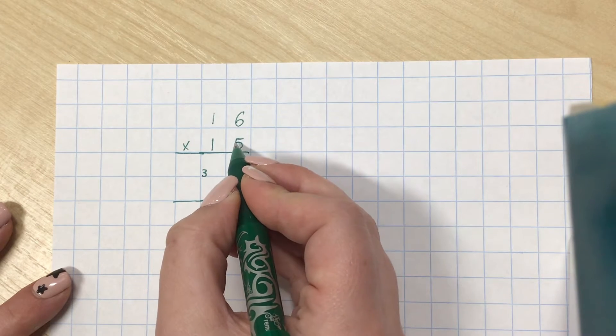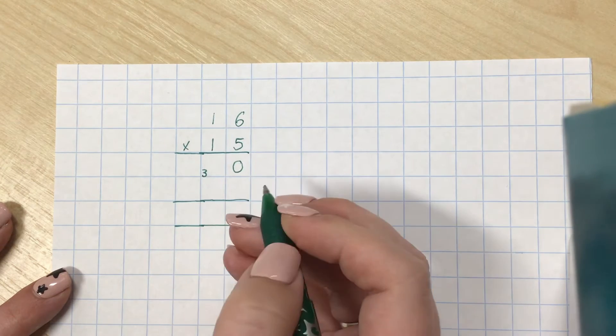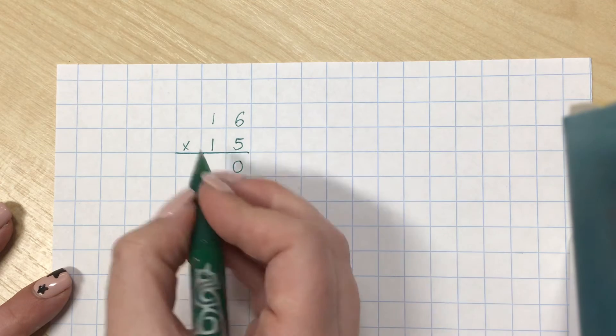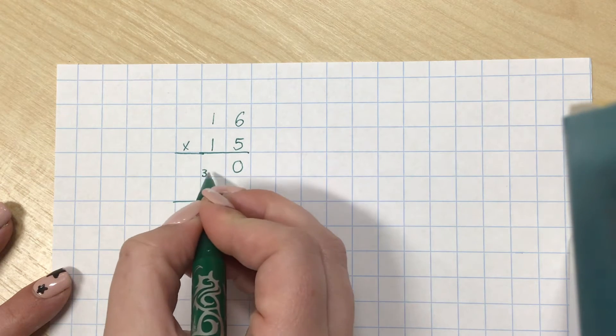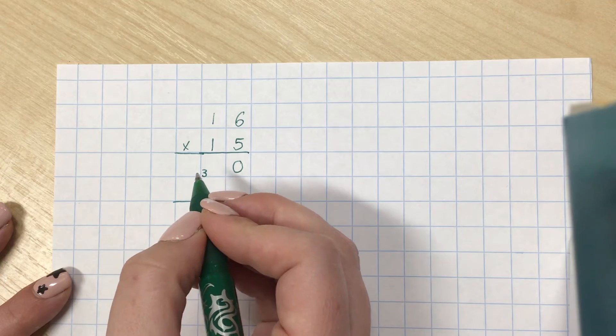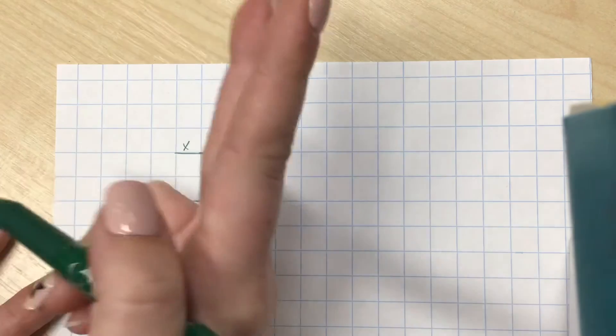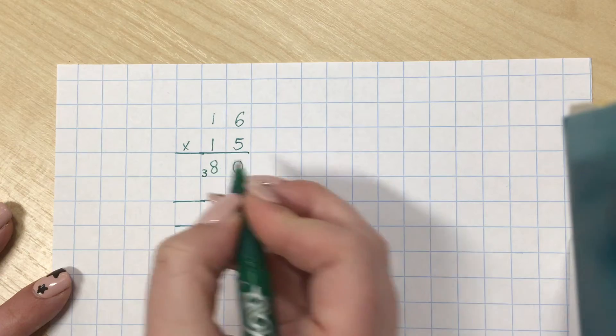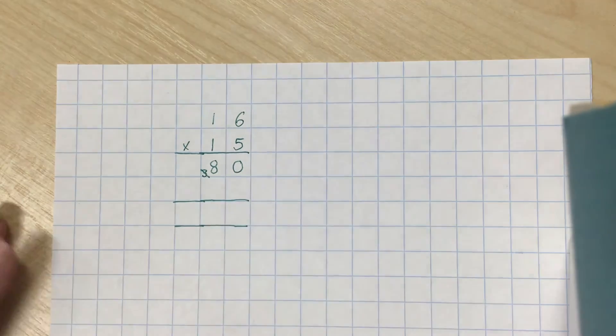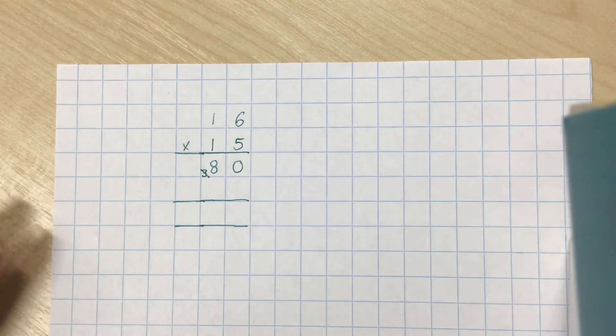Now, I need to do 5 times 1 or 1 times 5, which we know is 5. But this 3 here, I need to add on. So, 5, 6, 7, 8. And I would put my 8 in there like that, and I can now cross out the 3 because I've added it on.